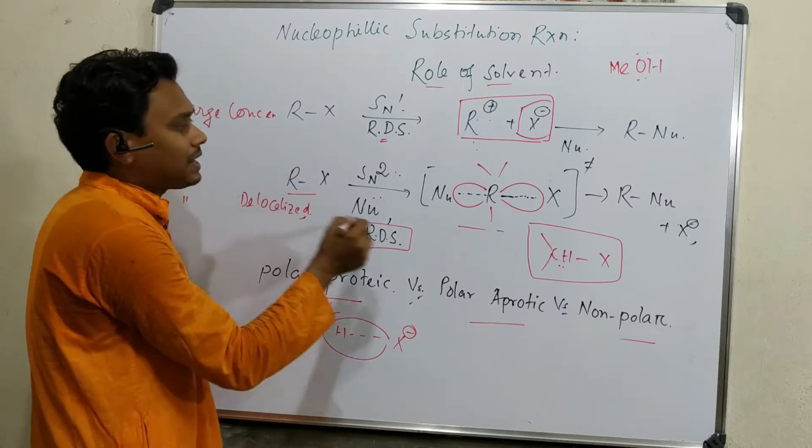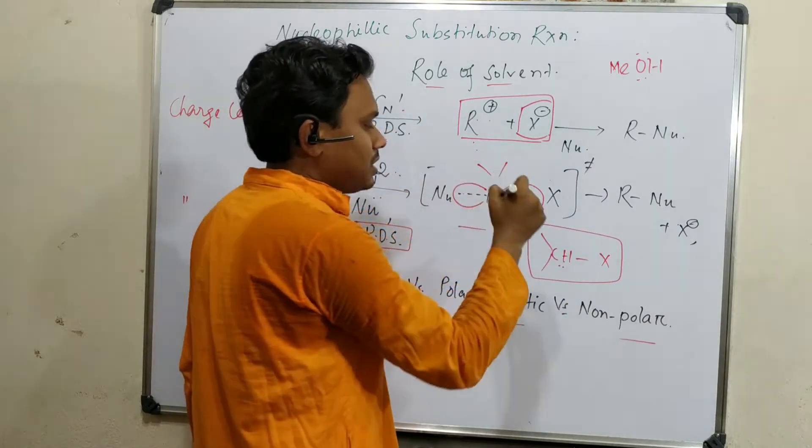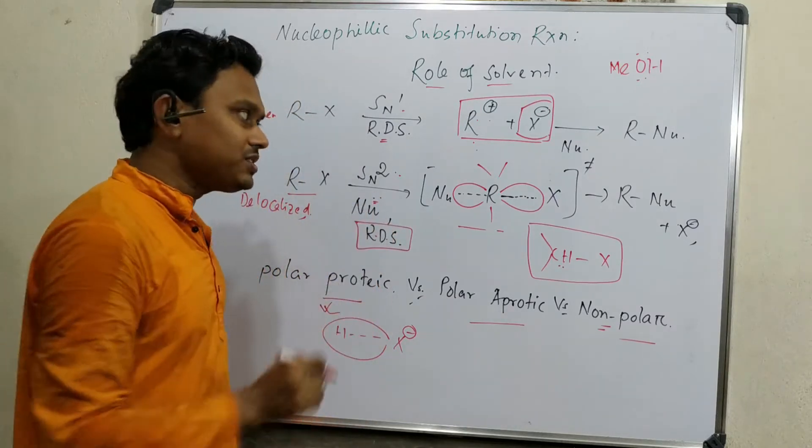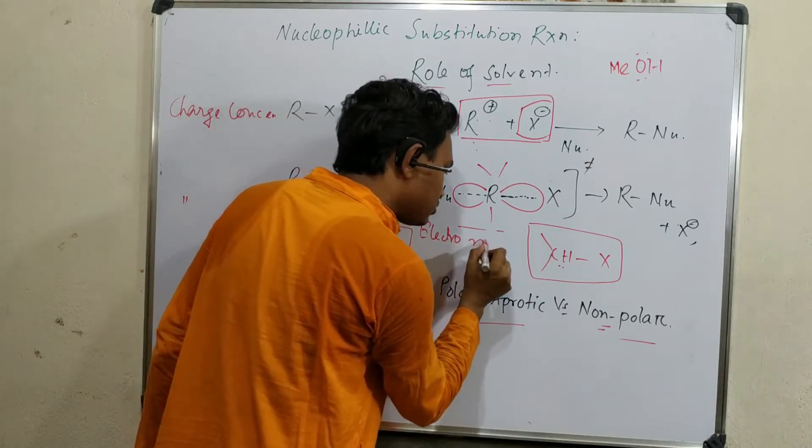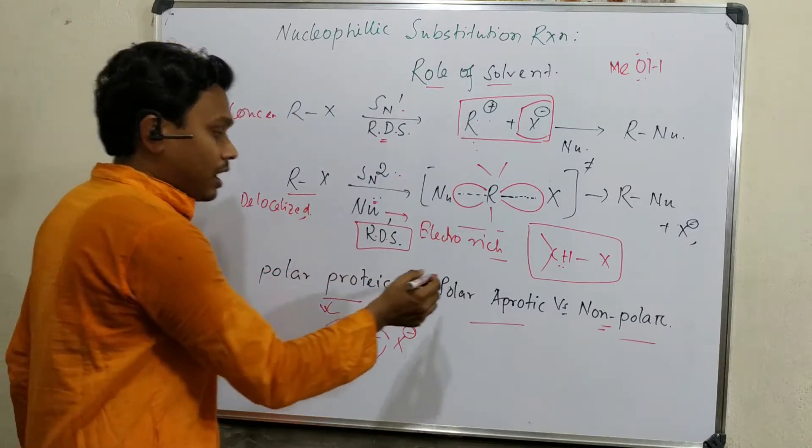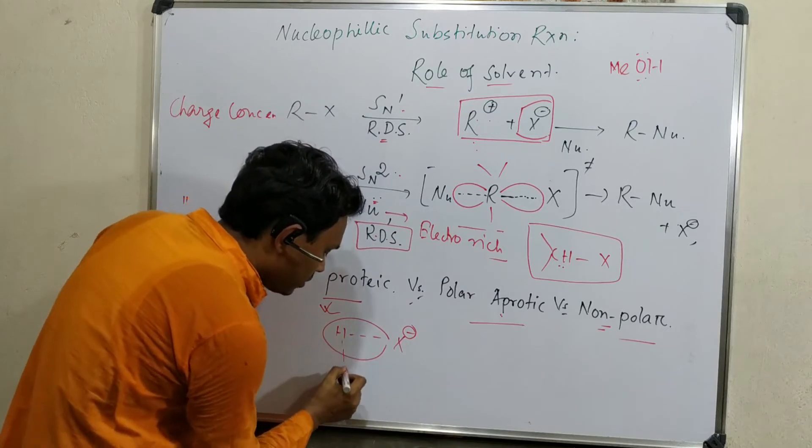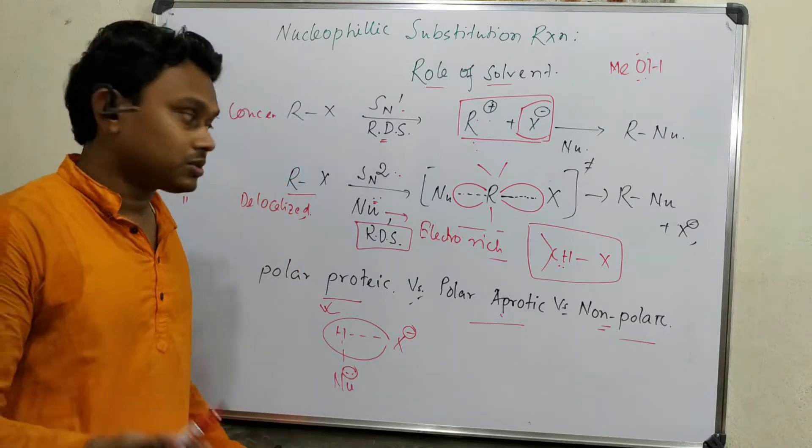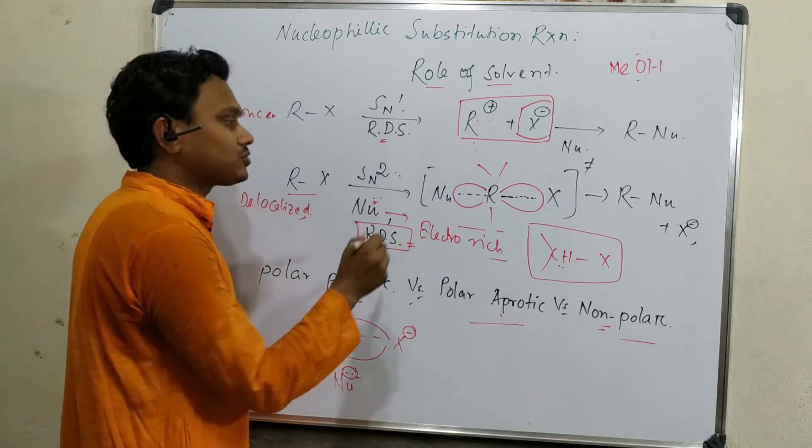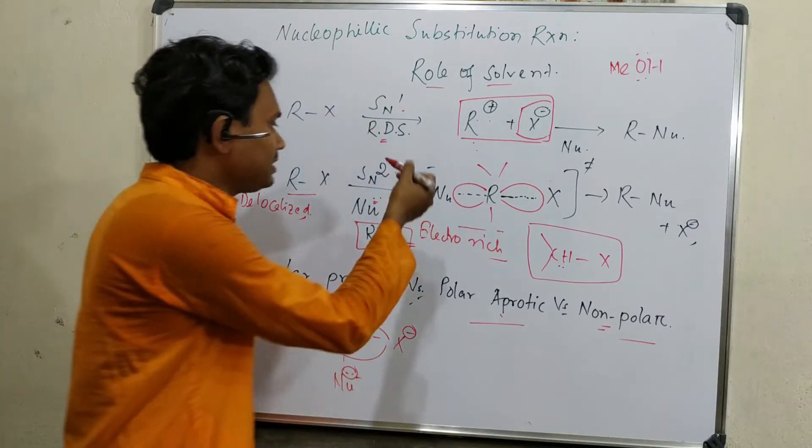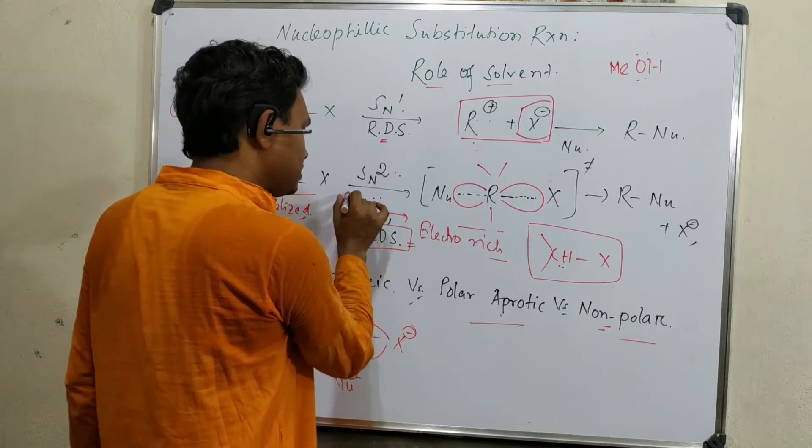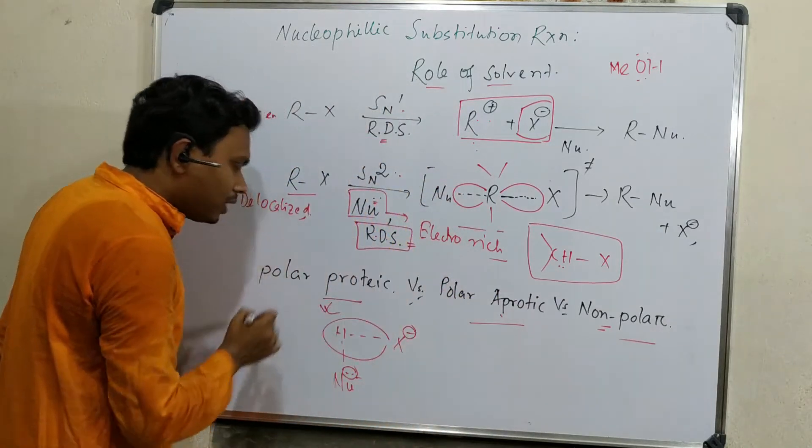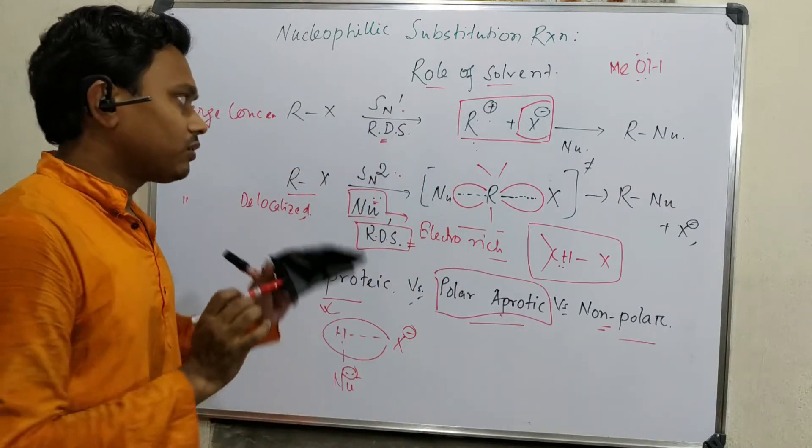And second main difference, this formation of carbocation is the rate determining step in SN1 reaction. But in case of this, transition state is the rate determining step of this SN2 reaction. And here we are going to explain mainly the solvent about polar protic, polar aprotic versus non-polar. You see one charge is produced. When there is a chance of charge production in the rate determining step, so it is necessary to stabilize the charge. In case of polar protic, polar protic and polar aprotic stabilize the charge. For halide, means negative charge separation, we need polar protic solvent. This hydrogen bond helps to stabilize the X minus.